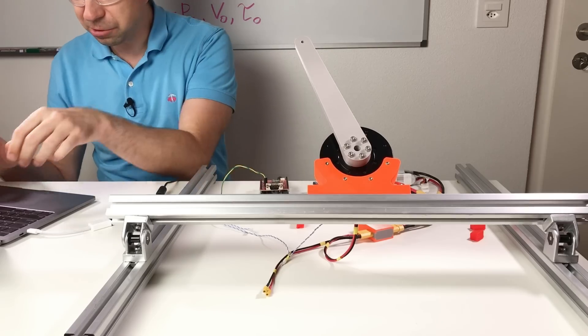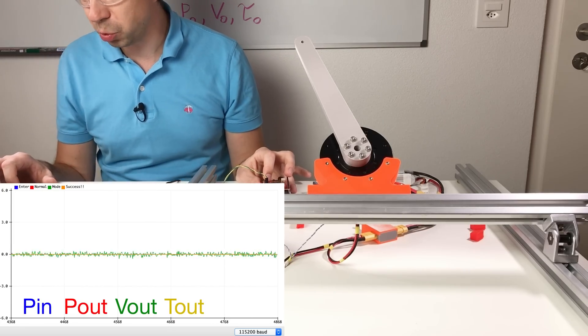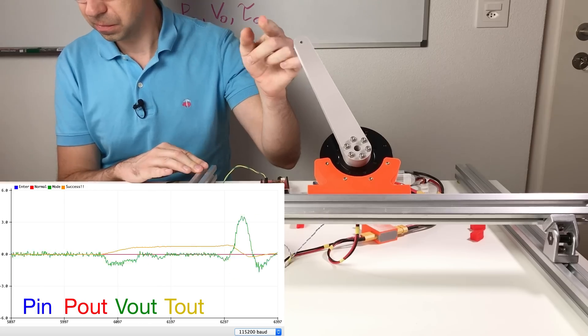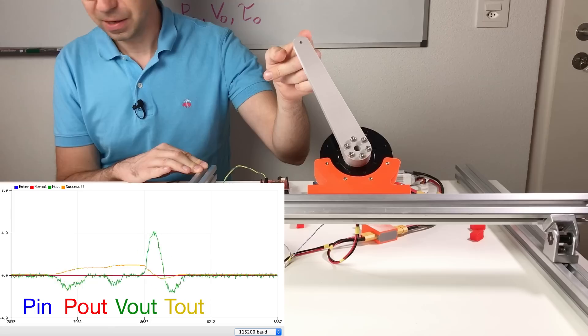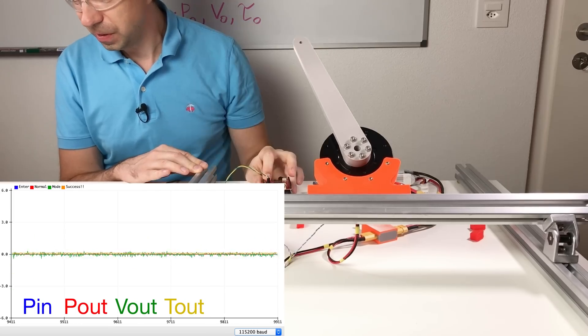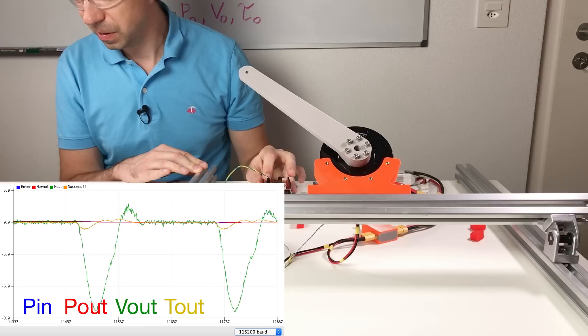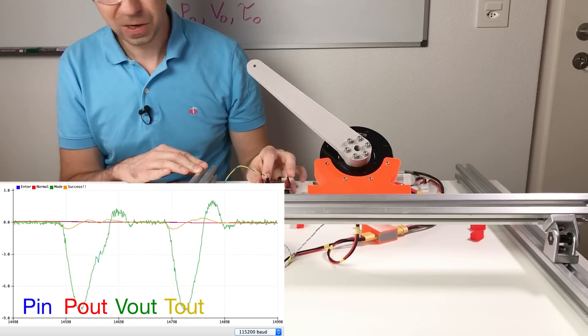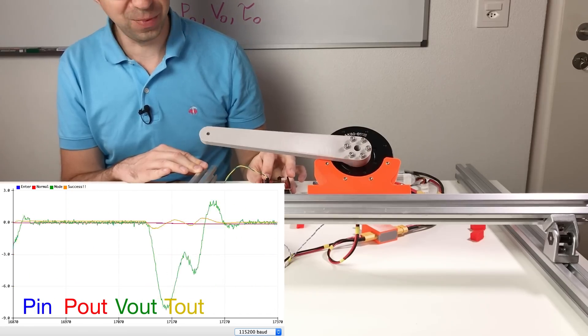Now let's decrease the damper. So here the stiffness is 10 and the damper is 0.1. You see now it overshoots. Not very stable.